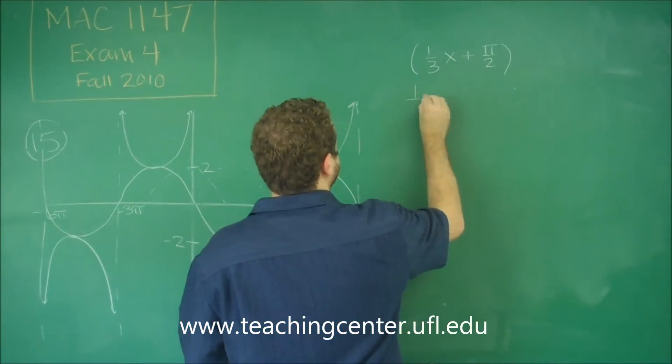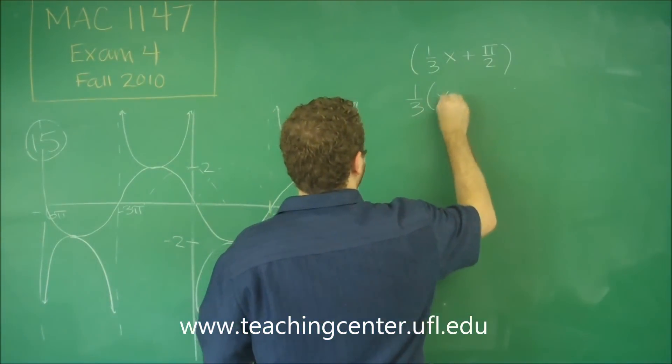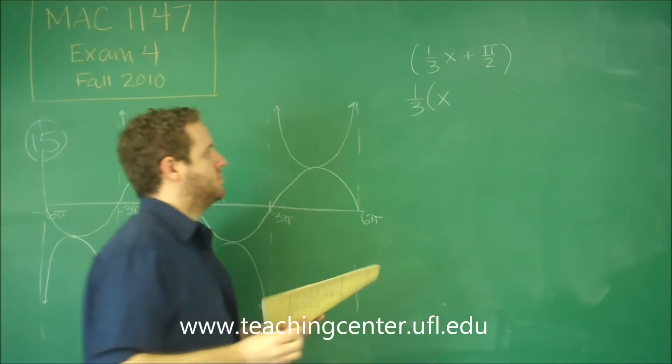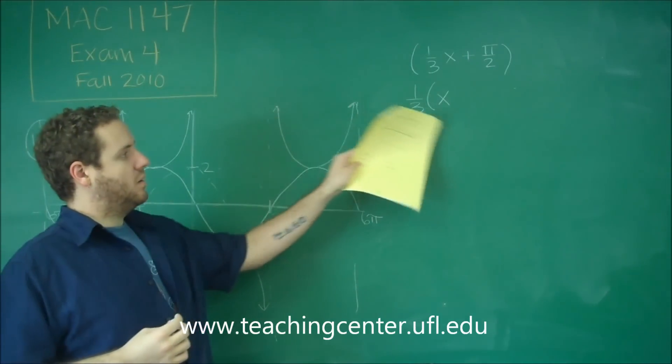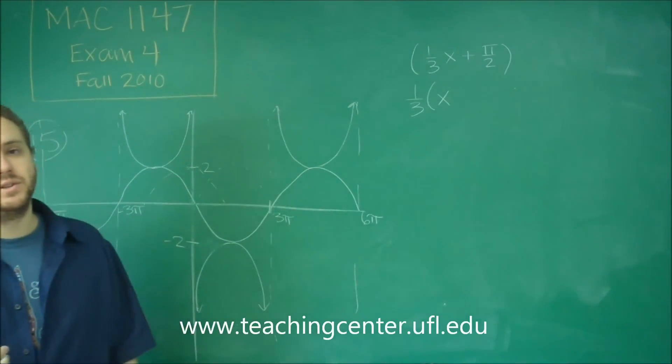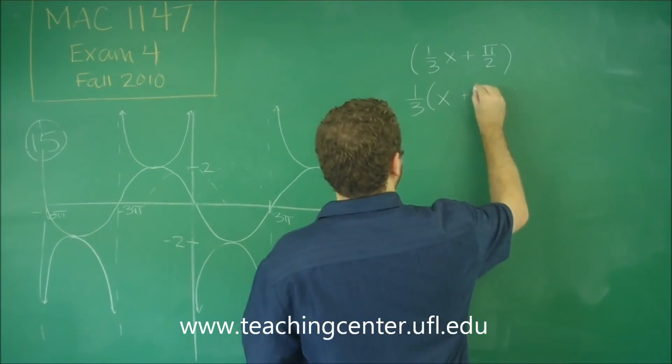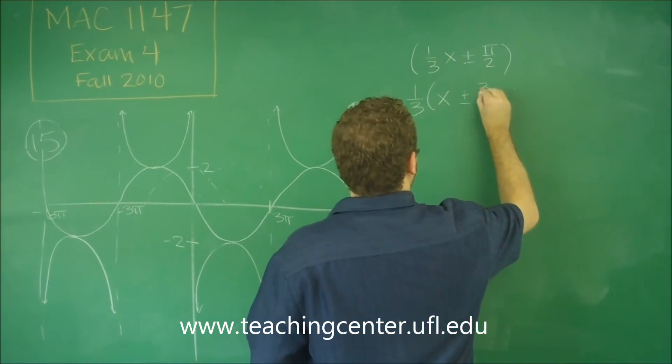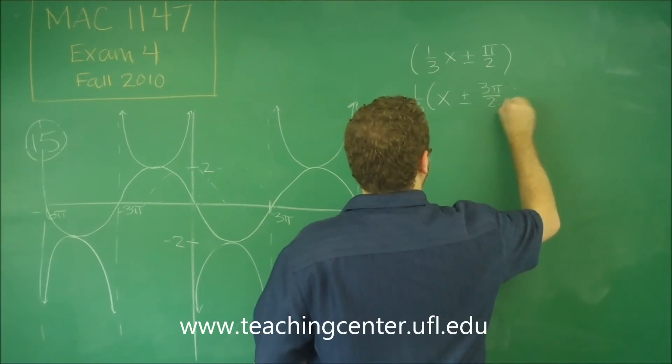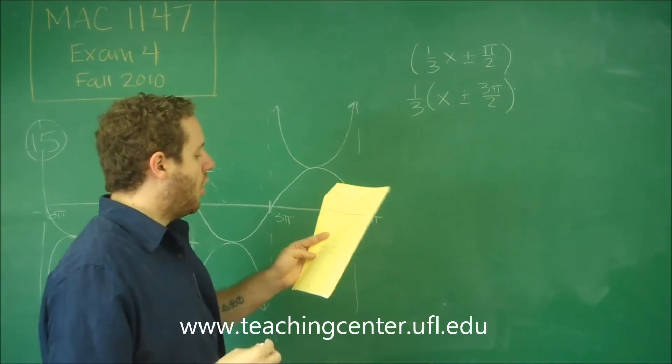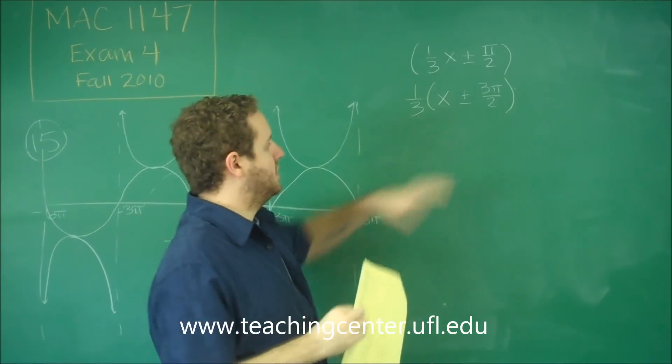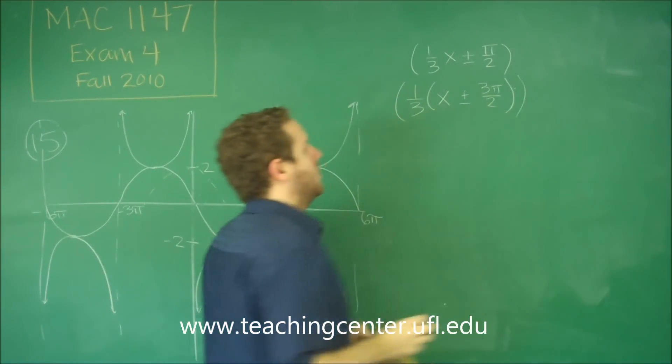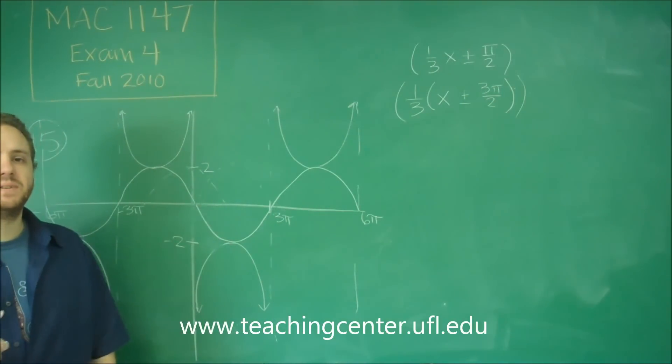If we factor out the 1 third, what would we get? So remember, when you multiply the 1 third back, you have to get out pi over 2. The only way that could happen is if it was, I'm going to write plus or minus, 3 pi over 2. So the remaining four choices here all actually are of this form when you take out the 1 third. So they're shifted left or right by 3 pi over 2.